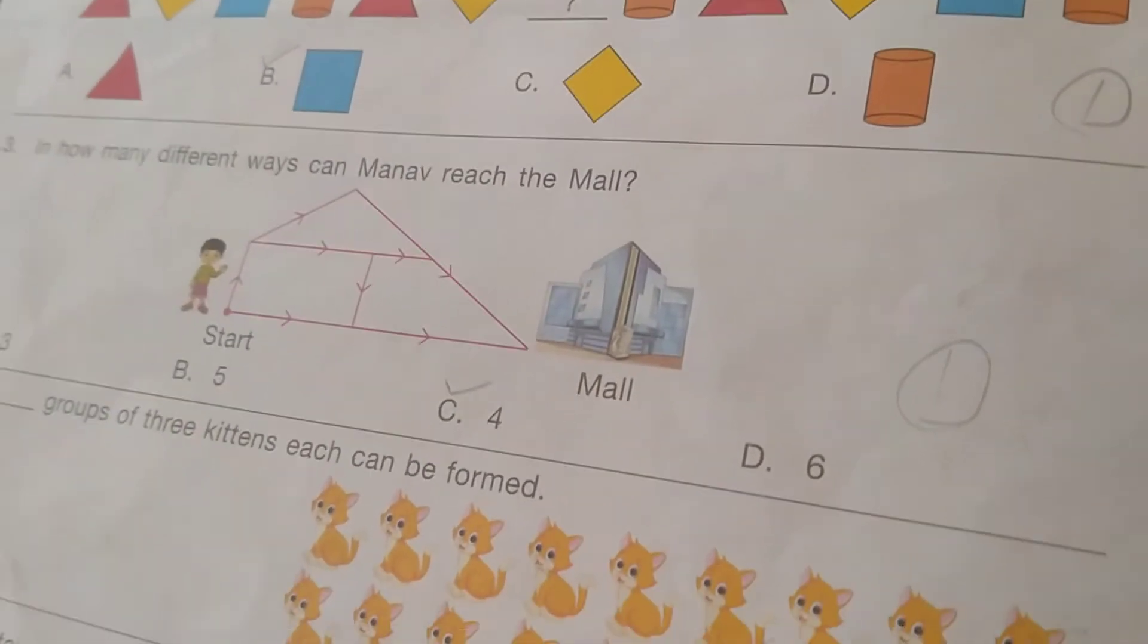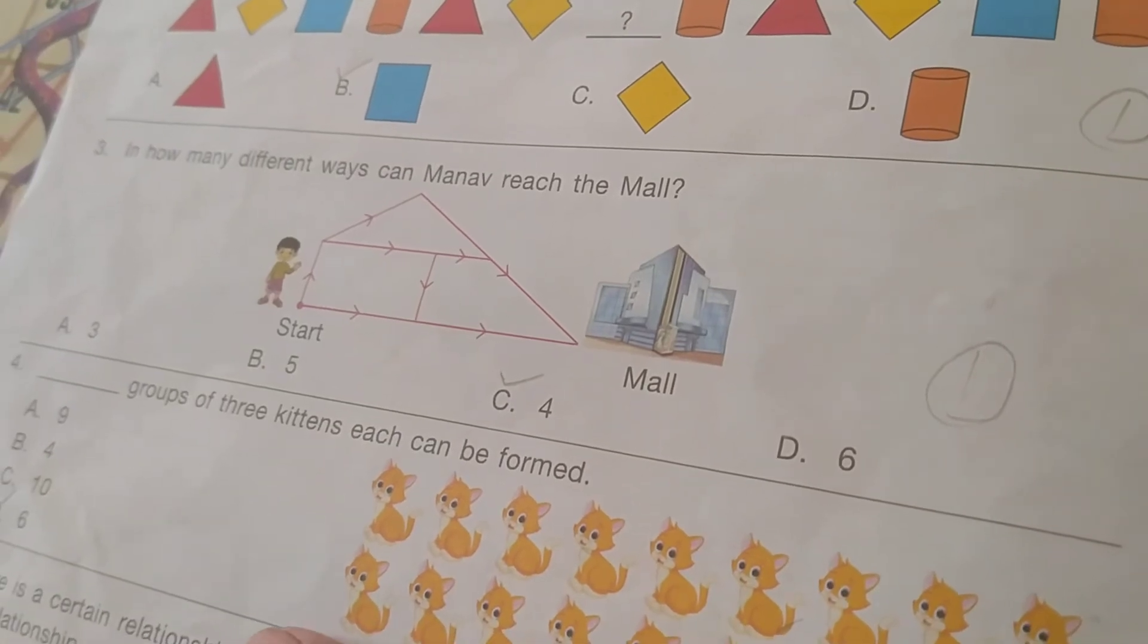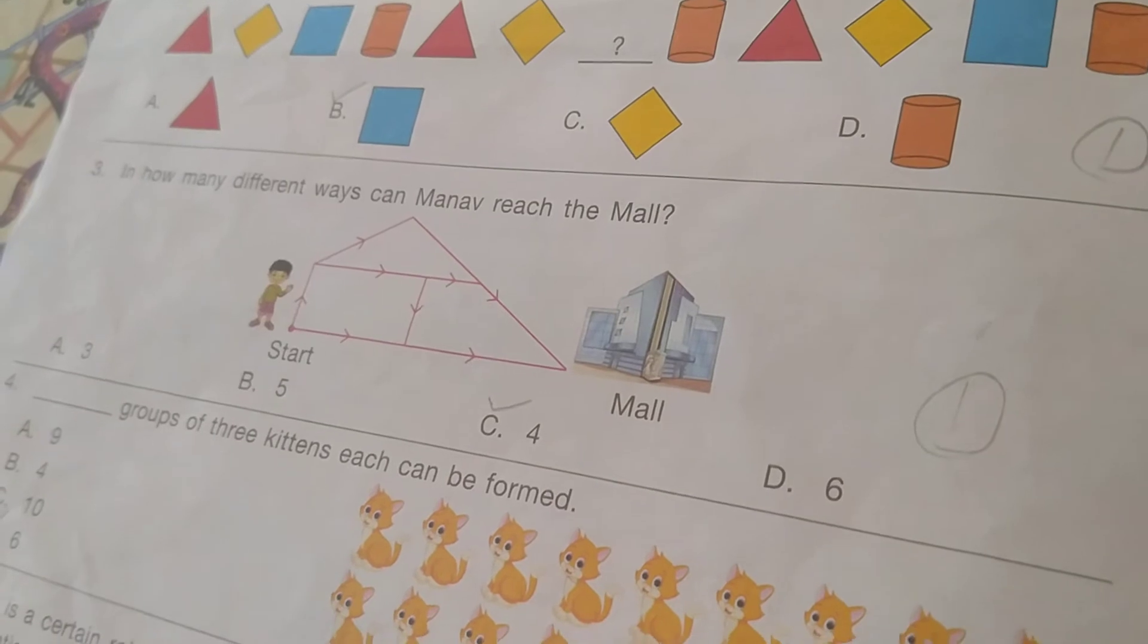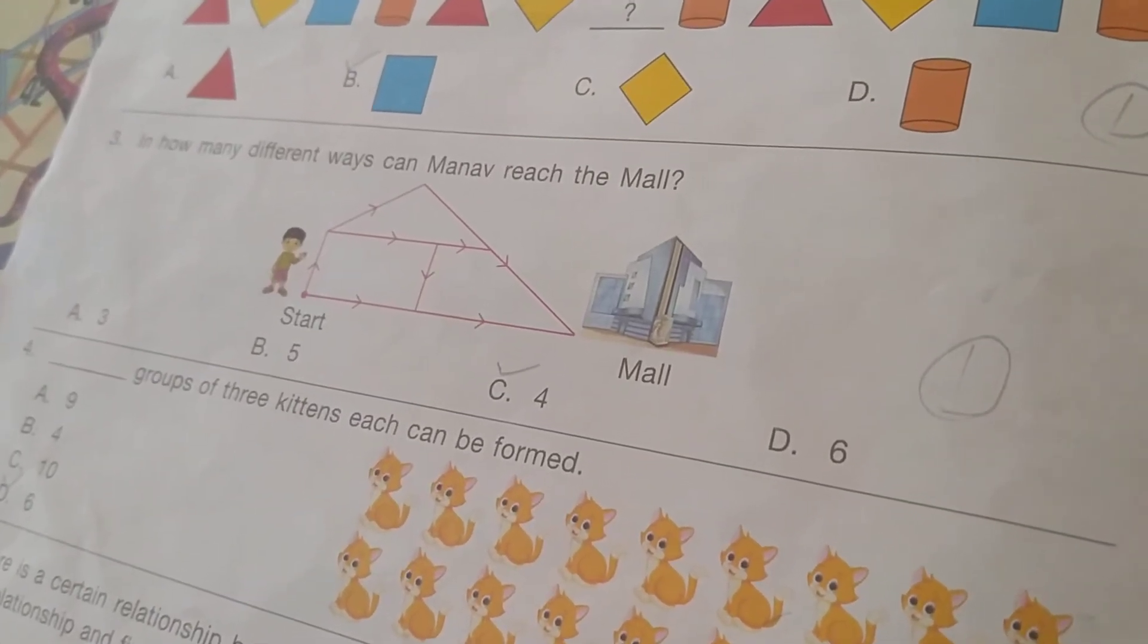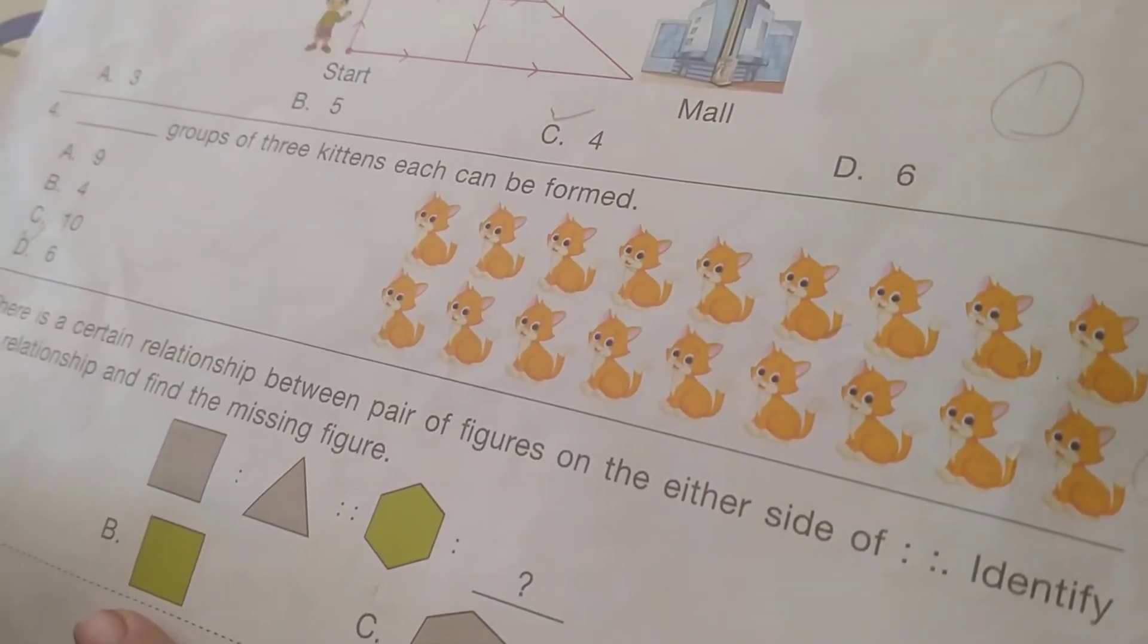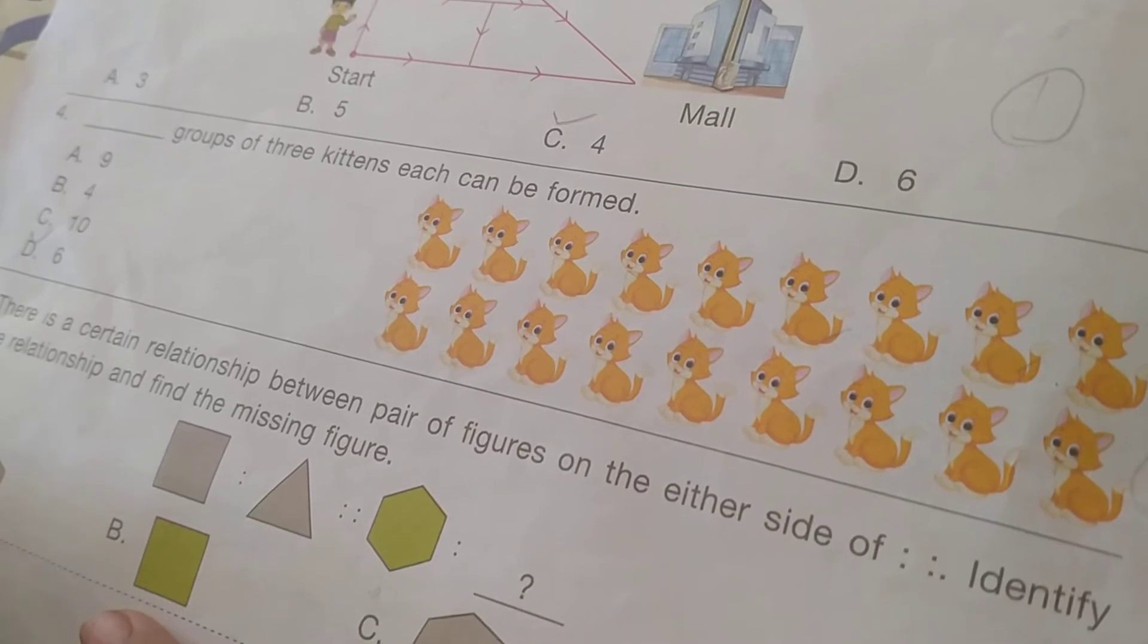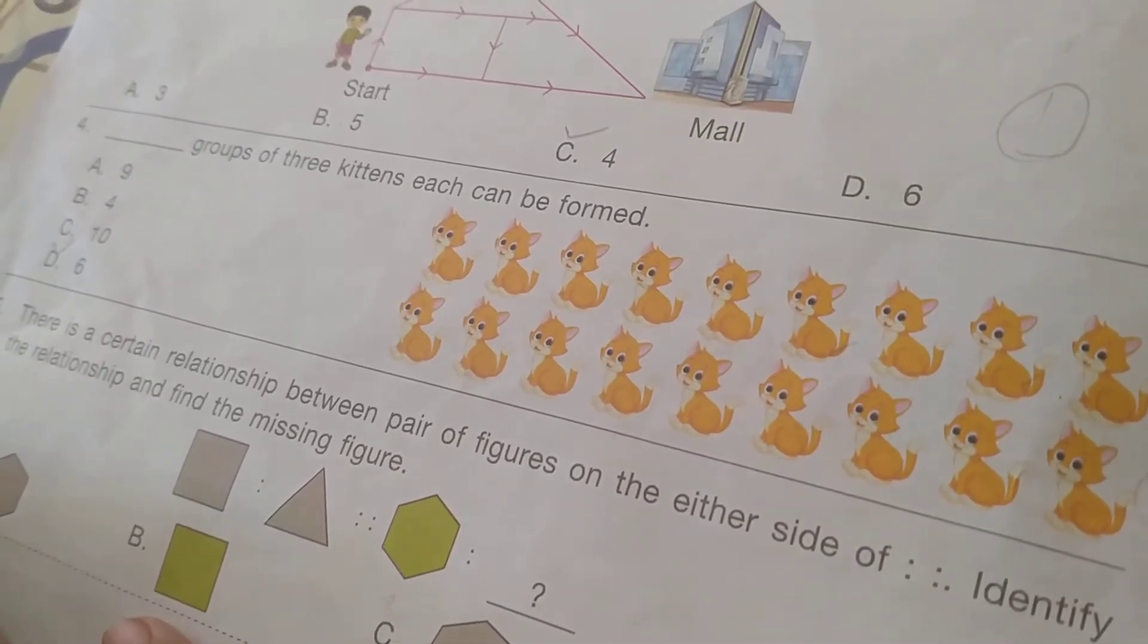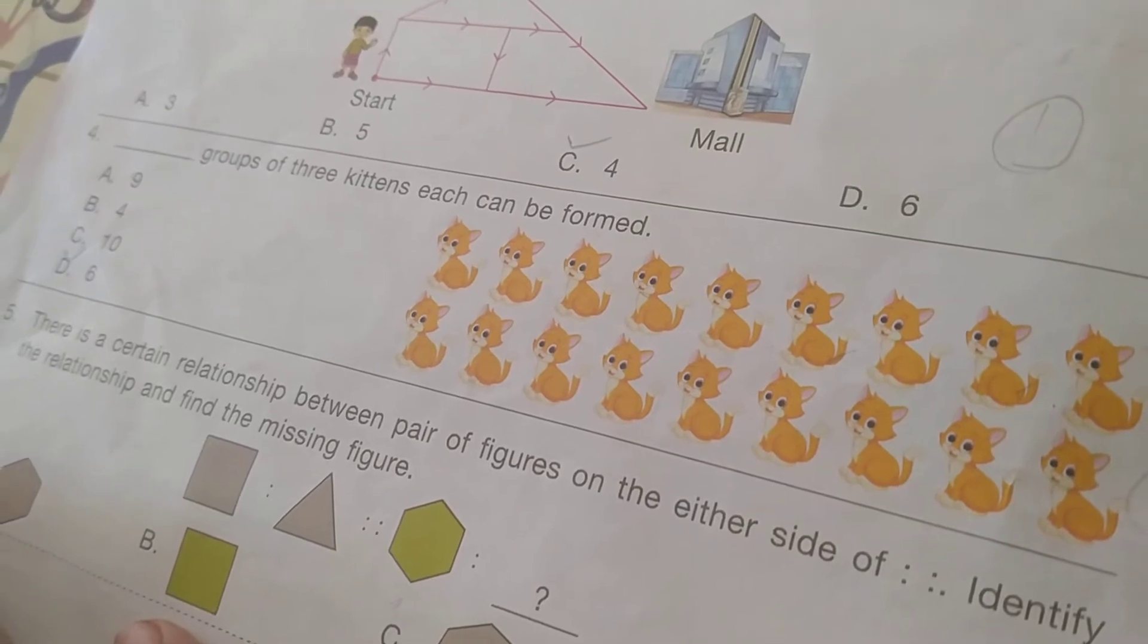In how many different ways can Manow reach Moll? So the answer is C, 4. Groups of three kittens each can be formed. So the answer is D, 6.